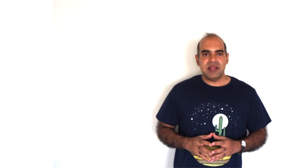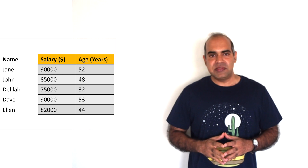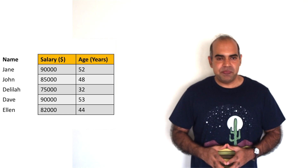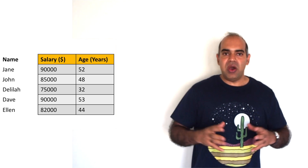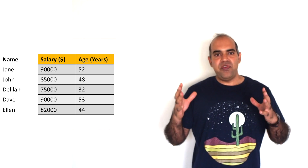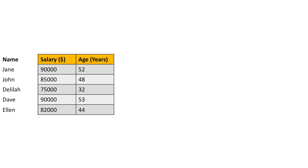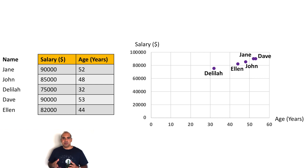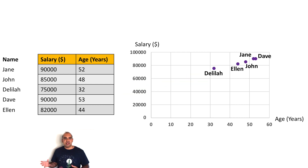Let us discuss how space is formed from data. Consider a data set like this one, where we have two columns — salary and age — and five rows for the employees of a company. The employees are Jane, John, Delilah, Dave, and Ellen. This is a two-dimensional data set; it forms a space with two axes: one for age and one for salary. Let us put age on the horizontal axis and salary on the vertical axis. Each object of the data set becomes a point in the space using age and salary coordinates.